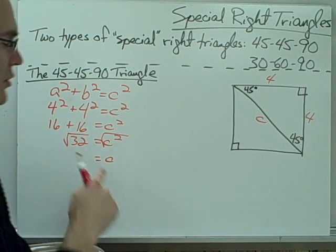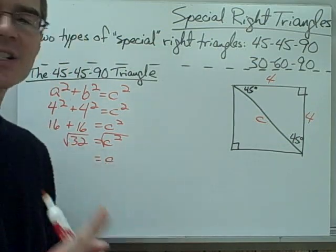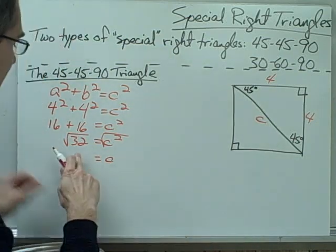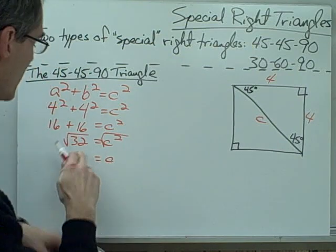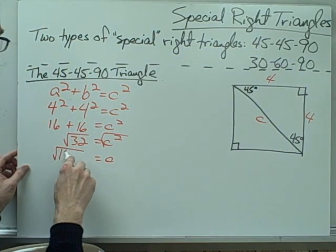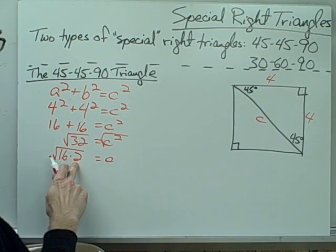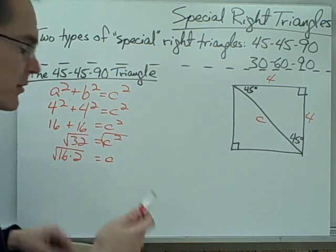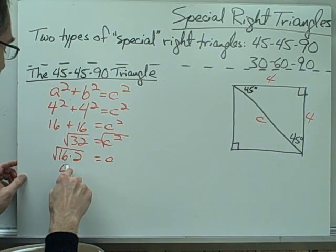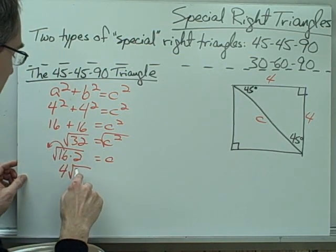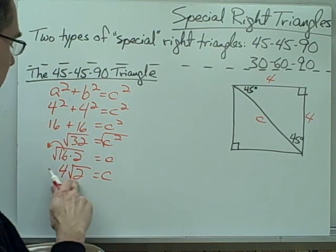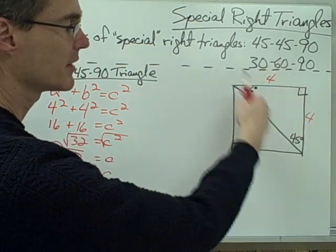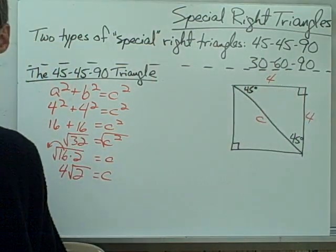We can solve for c: 16 + 16 = c², so 32 = c². Taking the square root of each side, I want to keep my radical and reduce the value under it. 32 equals 16 times 2, and 16 is a perfect square, so I can take the square root of 16 out from under the radical. The square root of 16 is 4, so c equals 4√2. If the legs of my triangle are 4, then my hypotenuse is 4√2.